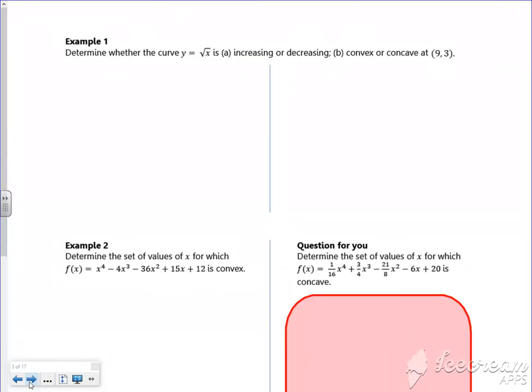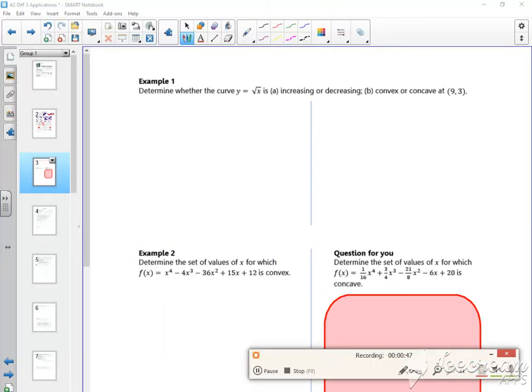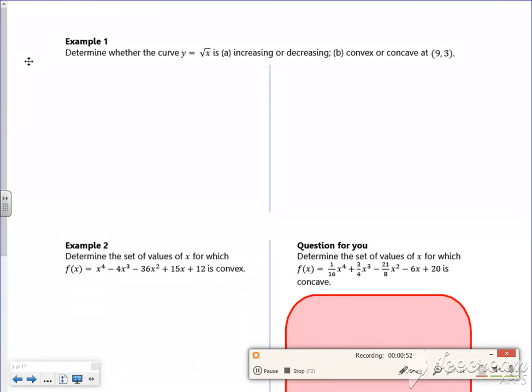Right, so I'm going to do an example. I need to just watch out my time, make sure I'm okay for time. So example one says, determine whether it's increasing, decreasing, convex or concave at (9,3). Right, so let's differentiate it then.